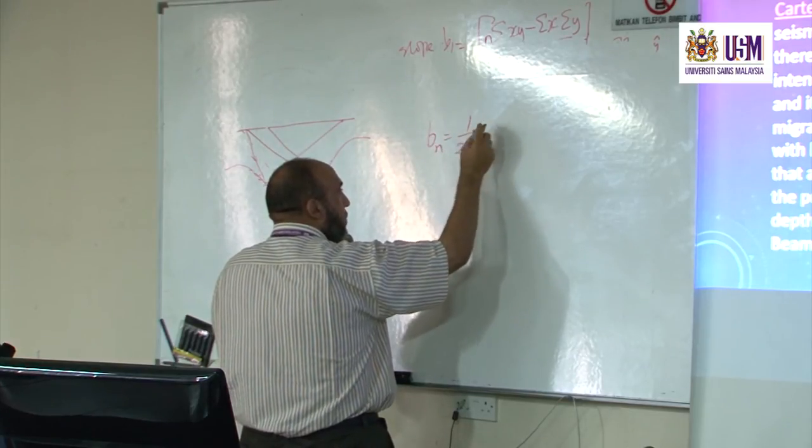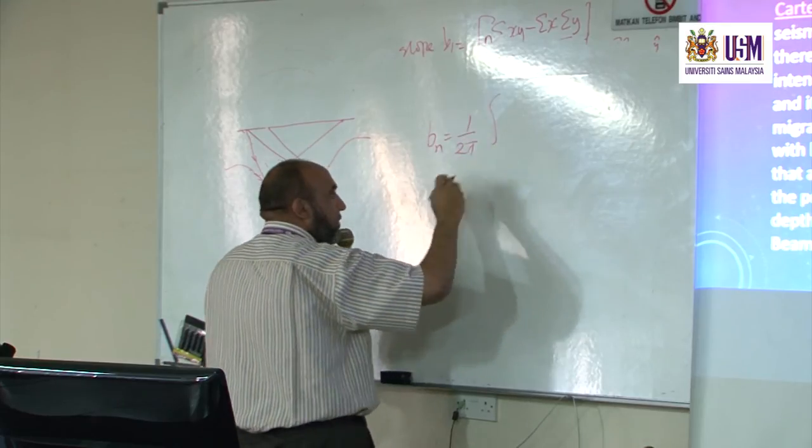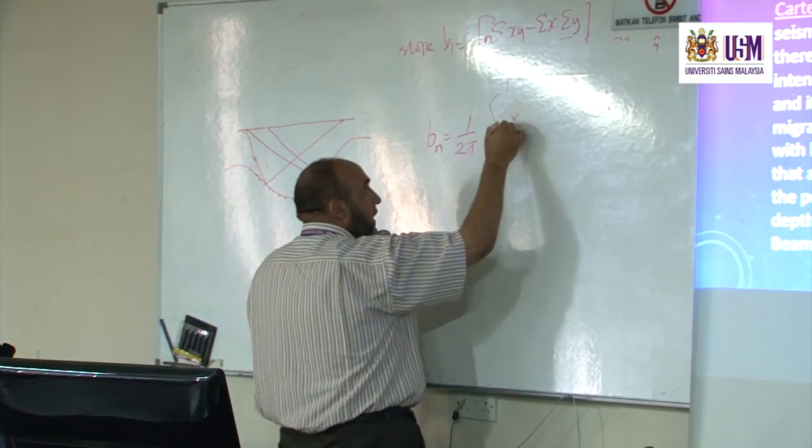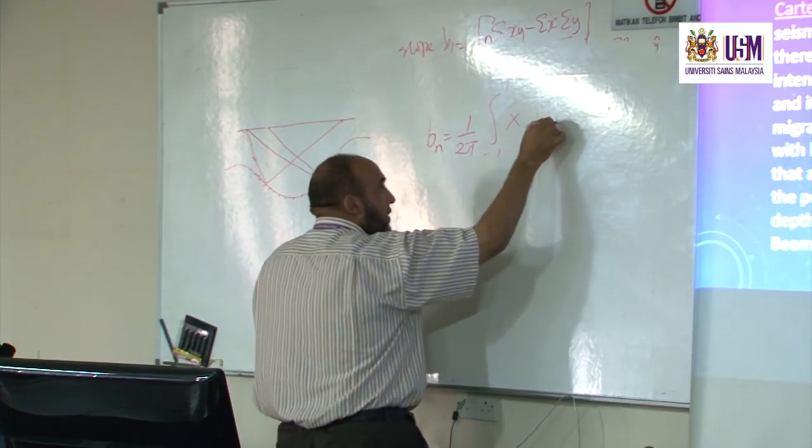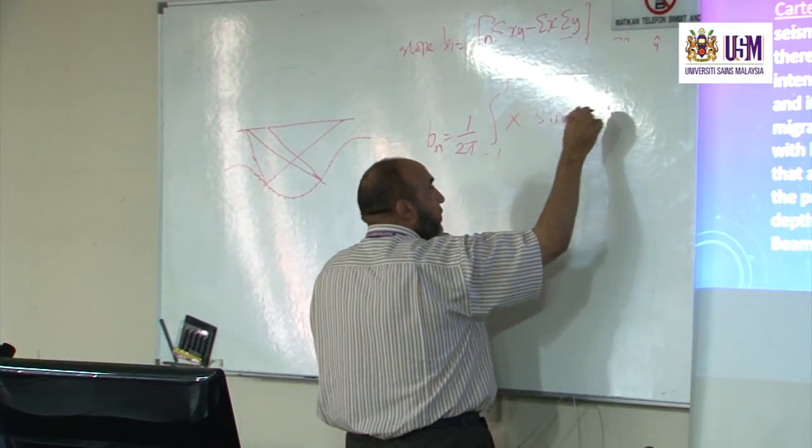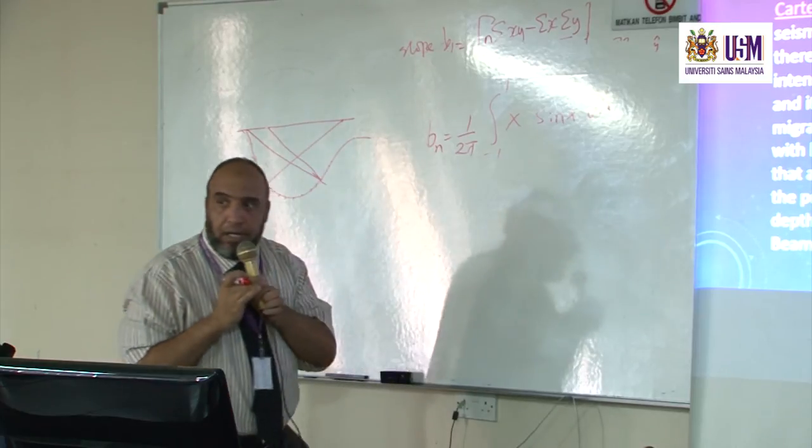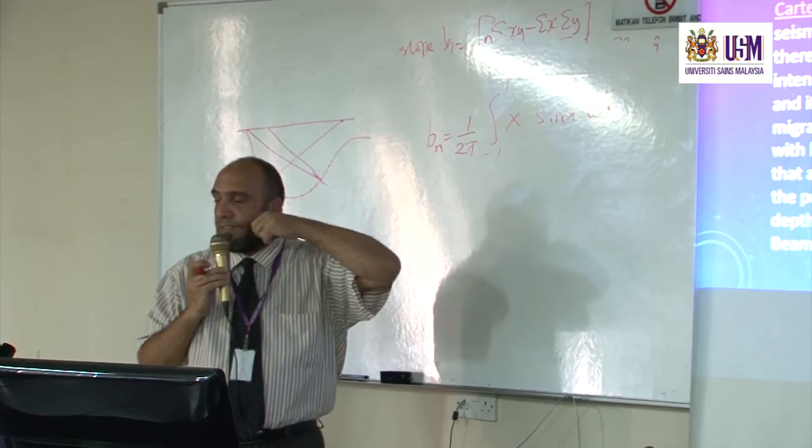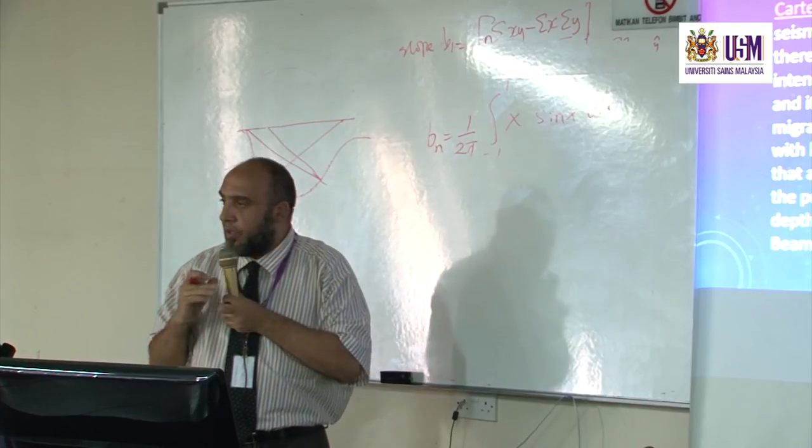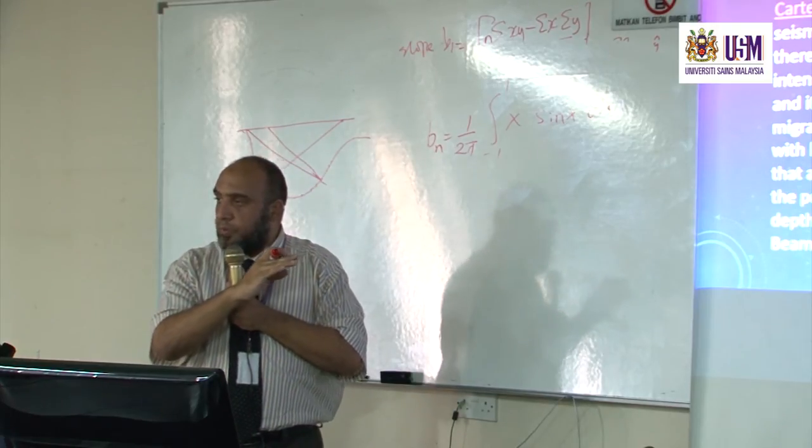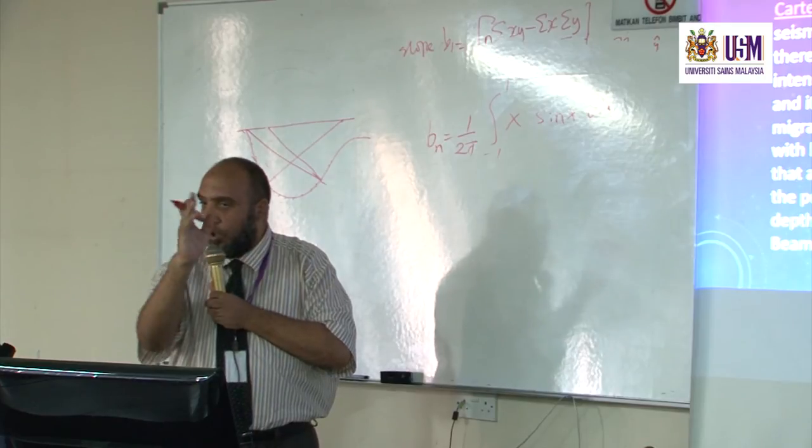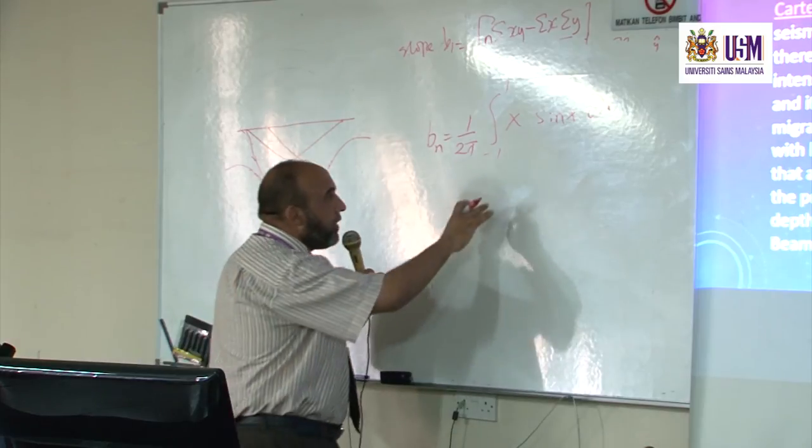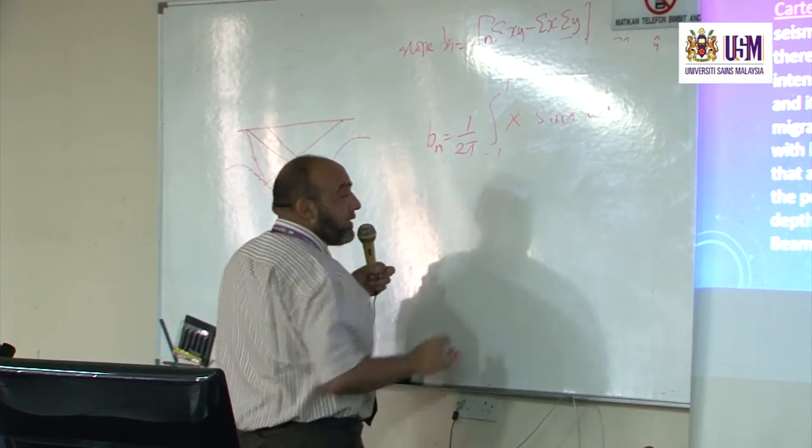So I will end up with b_n, which is equal 1 divided by 2 from minus 1 to 1, x sin x dx. x is an odd function, sin x is an odd function, so the final solution will be odd times odd gives even. So I want to solve this.